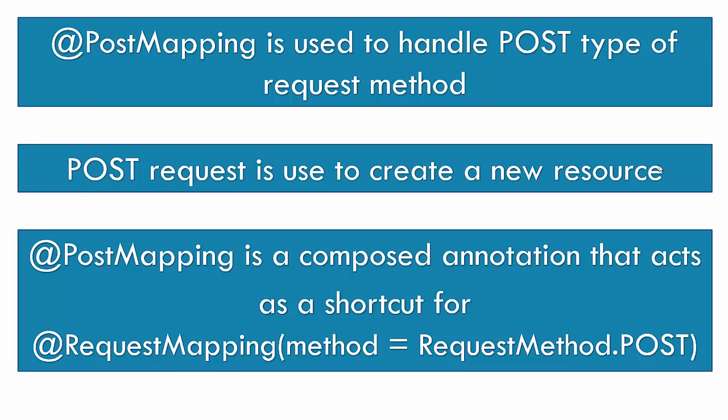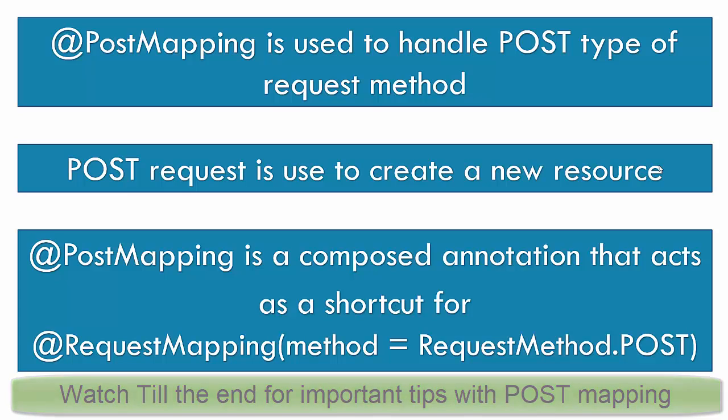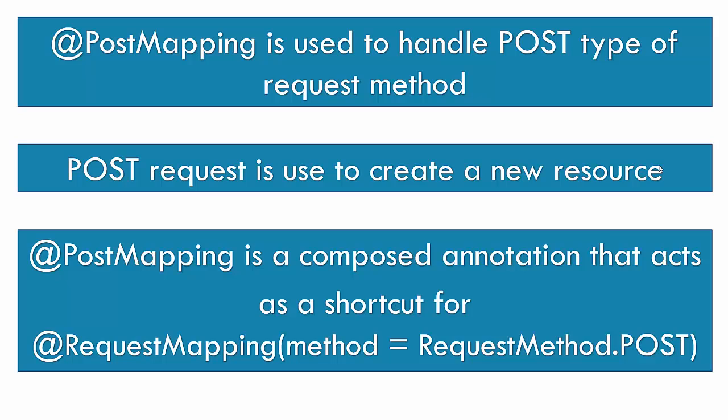POST mapping is basically used to handle the POST type of request method. POST request is used to create a new resource. Like, suppose if you want to create a new item in the DB, you can think of a situation like a dictionary. So if you want to fetch the data from a dictionary, you will be using GET mapping annotation. Now if you want to add a new word to the dictionary, then you must use something called a POST request, where we will be using the @PostMapping annotation. So POST mapping annotation is used to handle the POST type of request method.